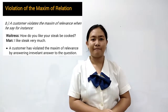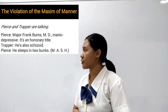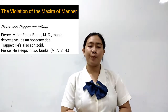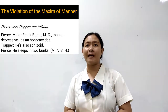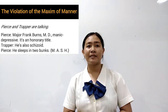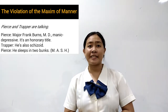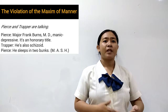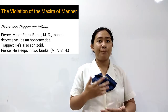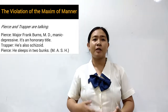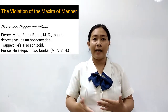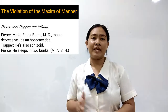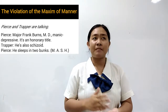Example of violation of the maxim of manner: Perse and Trooper are talking. Perse said, 'Major Frank Burst and the M.D. is an honorary title.' Trooper said, 'He is also a schizoid.' Perse replied, 'He slips into two banks — M-A-S-H.' Perse violates the maxim of manner because it is not clearly described that M.D. is an honorary title meaning 'medical doctor' or 'doctor of medicine,' not 'manic depressive.'